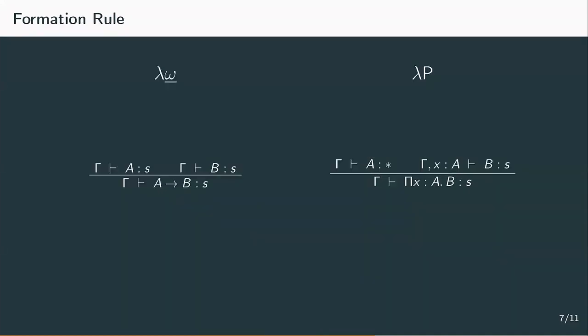The formation rule allows us to derive that A to B is type or kind if A and B on their own are also type or kind. A and B need to have the same sort S, which is then also the sort for A to B. This is the derivation rule that allows abstraction over types in the case that S is box.